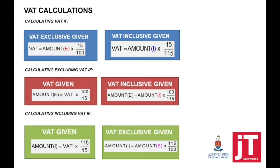Amount excluding is always equal to 100, plus VAT which is 15, equals amount including, which is always equal to 115.